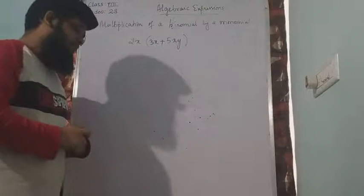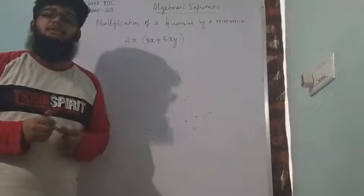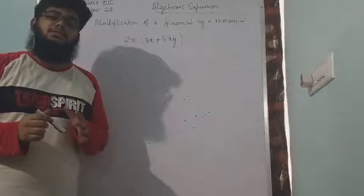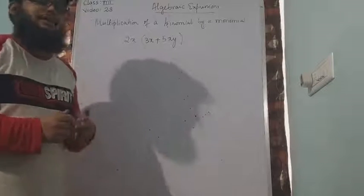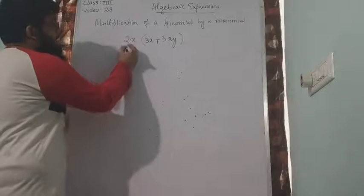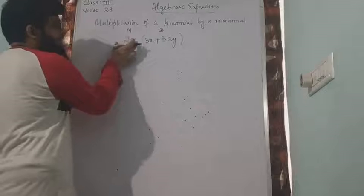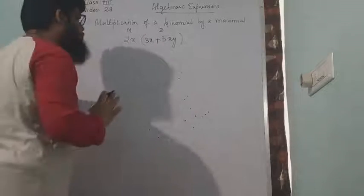Please understand the procedure correctly. It is very important. All these are going to be very very helpful in your future classes. So pay attention completely. So 2x into 3x plus 5xy. As we know this is a monomial and this is a binomial. We are multiplying a monomial and a binomial. What to do?